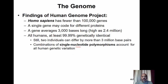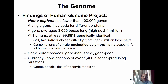This variation is due to combinations of single nucleotide polymorphisms — any one nucleotide along the DNA can vary from one individual to another in one of four possibilities: A, T, C, or G. Multiple such variations result in more and more variation. Some chromosomes are gene-rich while others are gene-poor. The project also located 1,400 disease-producing mutations, opening the possibility of genomic medicine.